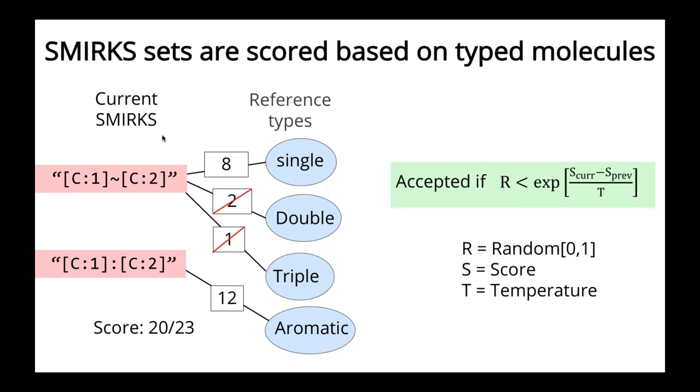So as a way of generating these new SMIRKS patterns, we then go through a Monte Carlo type simulation where after each new change is made to our list of SMIRKS patterns, we evaluate this score that I just described using a Monte Carlo type acceptance ratio. So if the score goes up, we would always accept that move. And if the score goes down, there's still a probability of accepting it, the same as in other Monte Carlo algorithms.